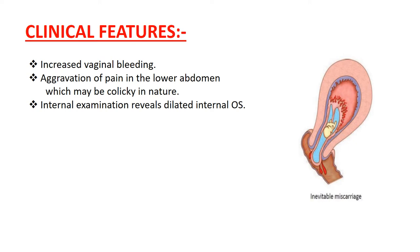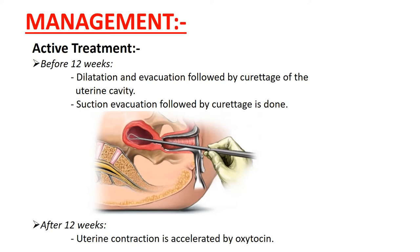The patient having features of threatened miscarriage develops the following manifestations: increased vaginal bleeding, and aggravation of pain in the lower abdomen which may be colicky in nature. Internal examination reveals a dilated internal OS. Management is aimed to accelerate the process of expulsion. In active treatment before 12 weeks, dilatation and evacuation followed by curettage of the uterine cavity using a blunt curette under general anesthesia is performed. If the fetus is expelled and the placenta is retained, it is removed by ovum forceps.